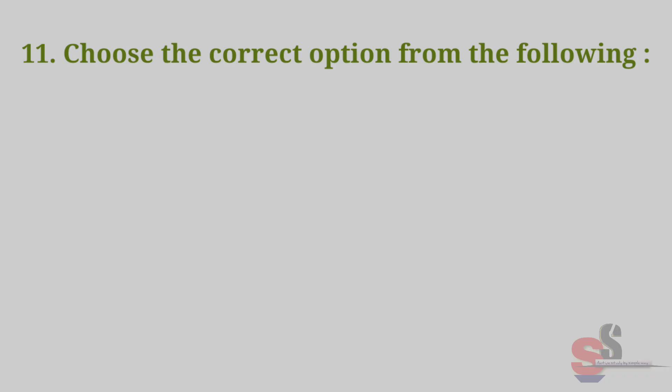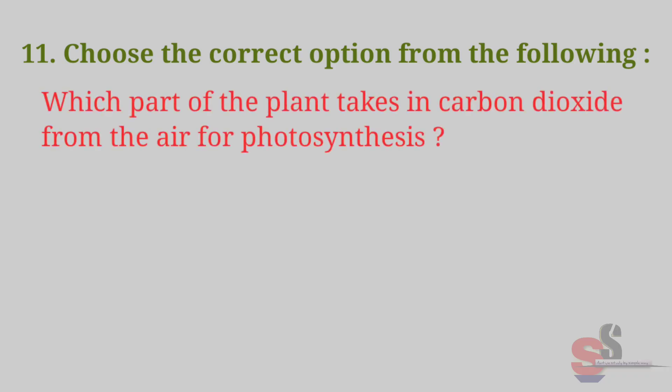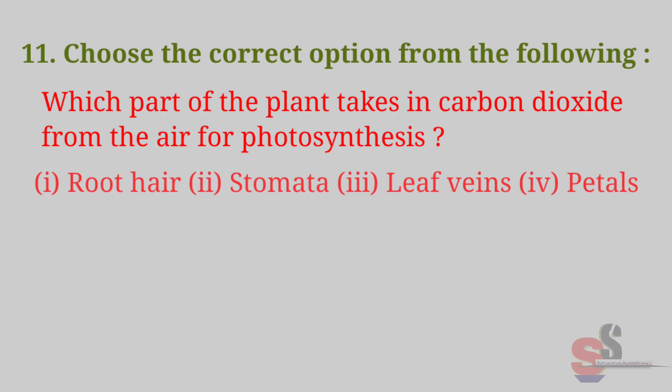Question 11: Choose the correct option from the following. Which part of the plant takes in carbon dioxide from the air for photosynthesis? Root hair, stomata, leaf veins, petals. Answer: stomata. Stomata takes in carbon dioxide from the air for photosynthesis.